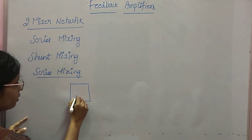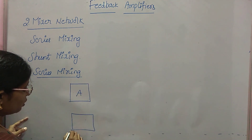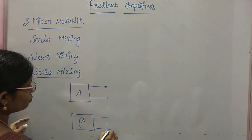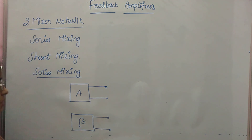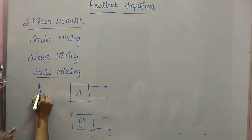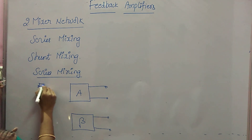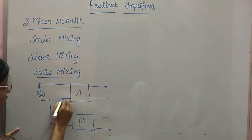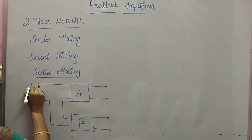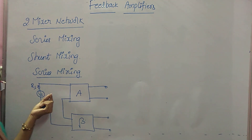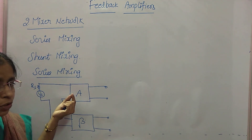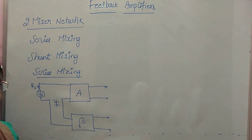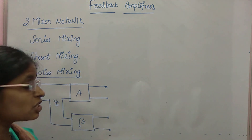In series mixing, this is your amplifier A and this is your feedback network. The feedback voltage is mixed in series with your input voltage. This is your feedback signal mixed in series.